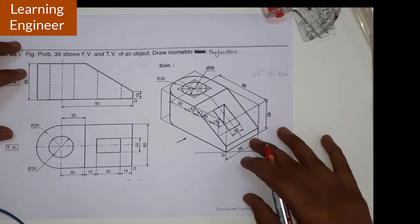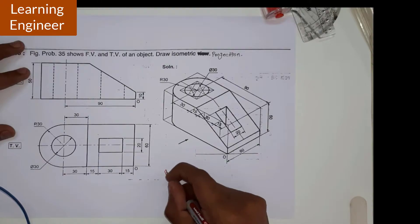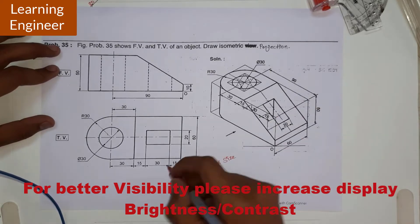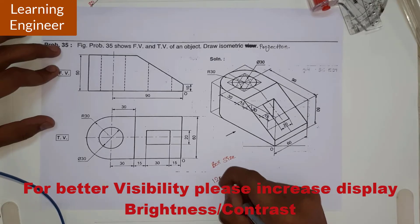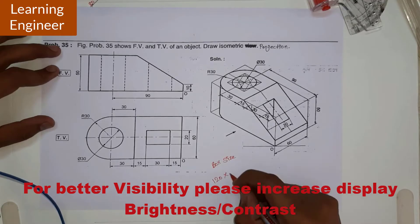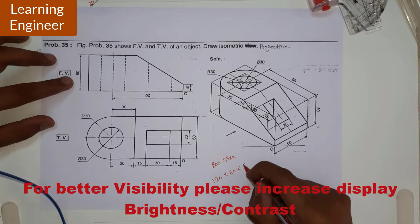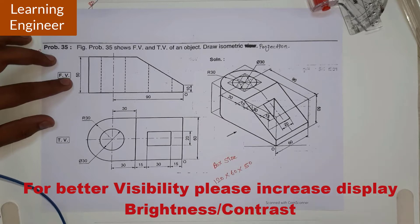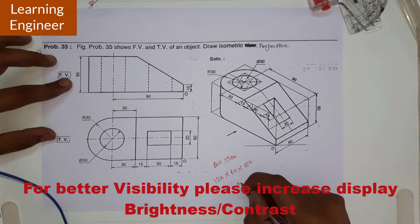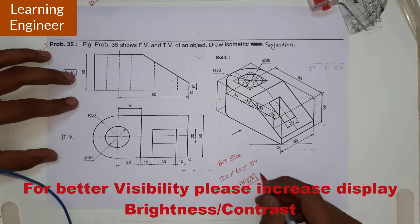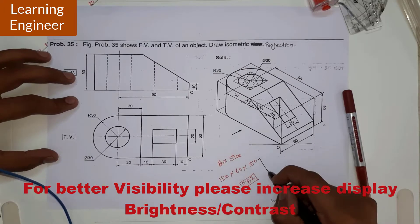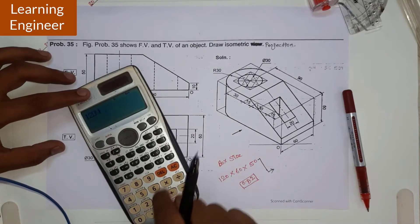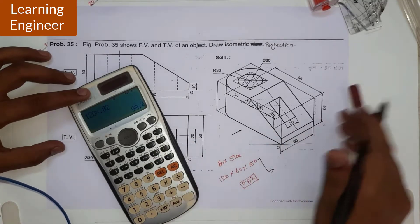For the isometric view, first we will decide the box size. The box size will be 90 plus 30, which is equal to 120. The width will be 60 and the height will be taken from the front view. We need to convert all dimensions to isometric scale by multiplying with 0.82. So 120 into 0.82 gives us 98.4.